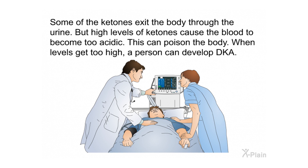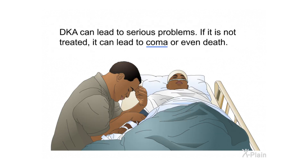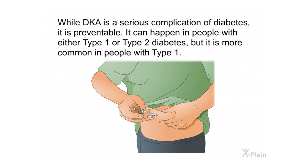Some ketones exit the body through the urine, but high levels of ketones cause the blood to become too acidic, which can poison the body. When levels get too high, a person can develop DKA. DKA can lead to serious problems if not treated, including coma or even death. While DKA is a serious complication of diabetes, it is preventable. It can happen in people with either type 1 or type 2 diabetes, but it is more common in people with type 1.